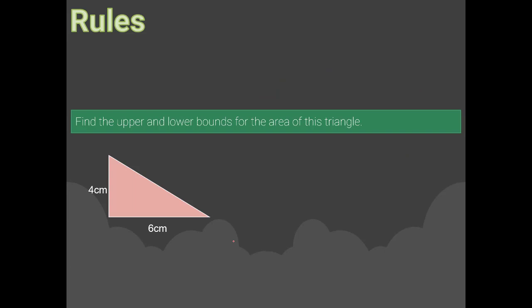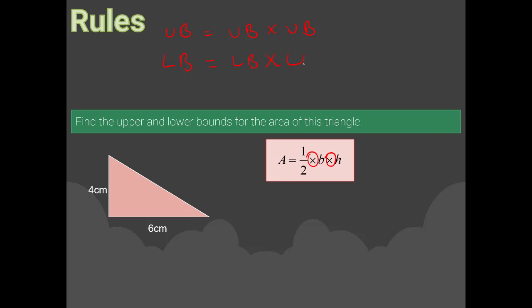Let's find the upper and lower bounds for the area of a triangle. The formula is: area = ½ × base × height. Since all operations are multiplication, the rule is: upper bound area = upper bound × upper bound, and lower bound area = lower bound × lower bound. For the 6 cm side: lower bound 5.5, upper bound 6.5. For the 4 cm side: lower bound 3.5, upper bound 4.5.